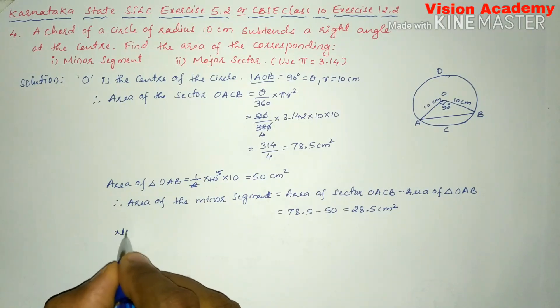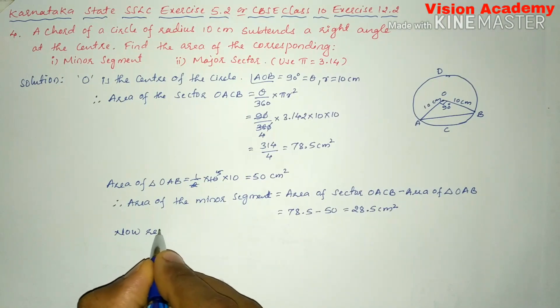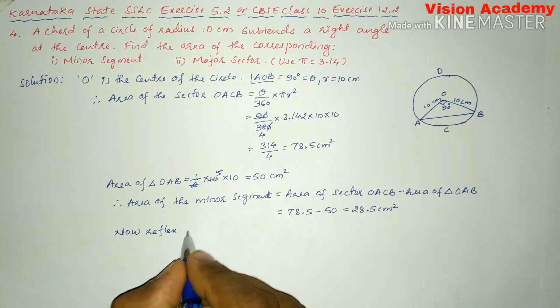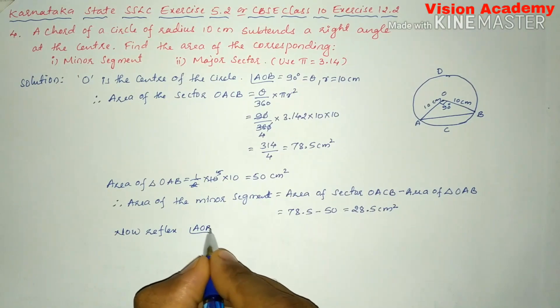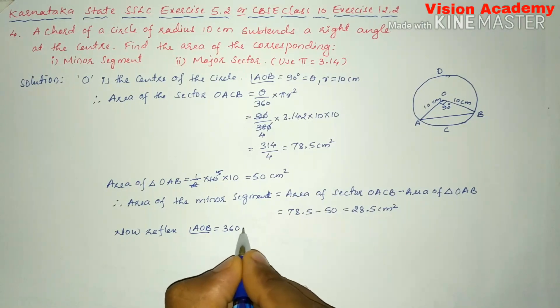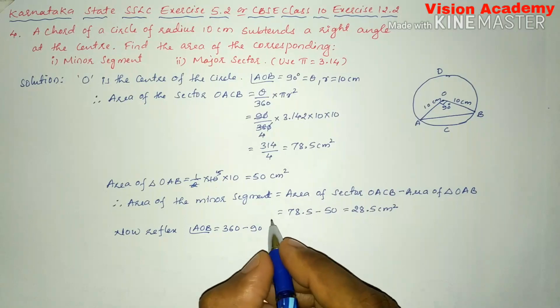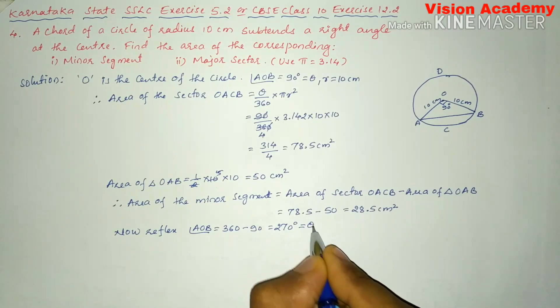Now reflex angle AOB is equal to 360 minus 90. This gives us 270 degrees which is equal to theta.